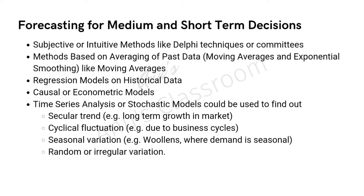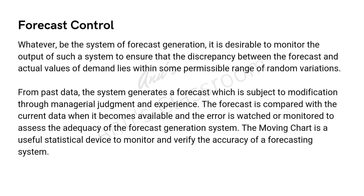For medium and short-term decisions, we have subjective or intuitive methods like the Delphi technique or committees. We have methods based on averaging of past data like calculating moving averages or exponential smoothing, or regression models on historical data. We can go for causal or econometric models, and if it is time-bound data, then we can go for time series analysis or stochastic models like the secular trend model — which can help understand long-term growth in the market — or cyclical fluctuations due to business cycles, seasonal variations like demand for woolen clothes in winter, or any random or irregular variation.